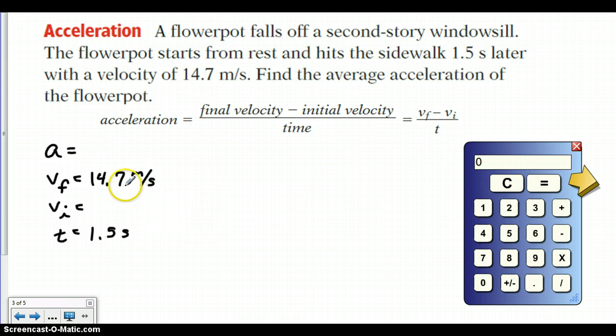It says find the average acceleration of the flowerpot, and that would be our question mark. We know that the initial velocity is 0 meters per second because it starts at rest. So we can just plug all these numbers into our equation. A equals V sub F minus V sub I divided by T.